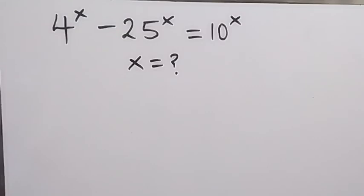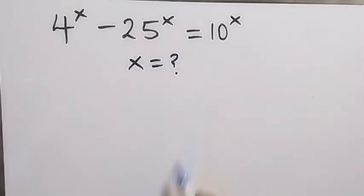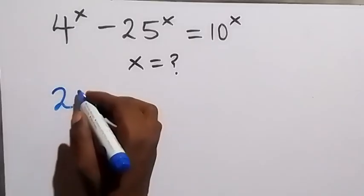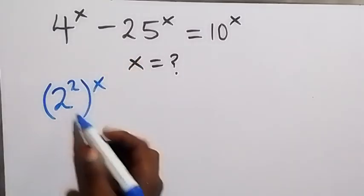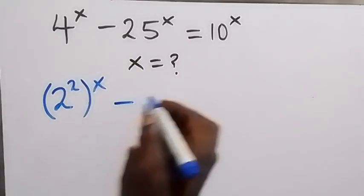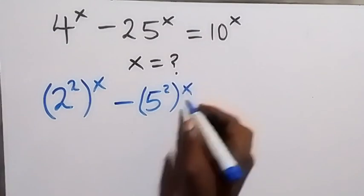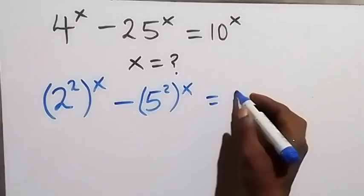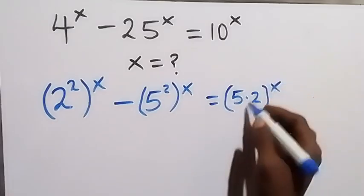Hello, you are welcome. How to solve this nice algebra equation: we have 4 raised to power x minus 25 raised to power x equals 10 raised to power x. From here, let's rewrite this as 2 raised to power 2, then raised to power x — 2 squared is the same as 4 — minus 5 squared, then raised to power x — 5 squared is 25 — equals, on this side, 10 separated as 5 times 2, then raised to power x.